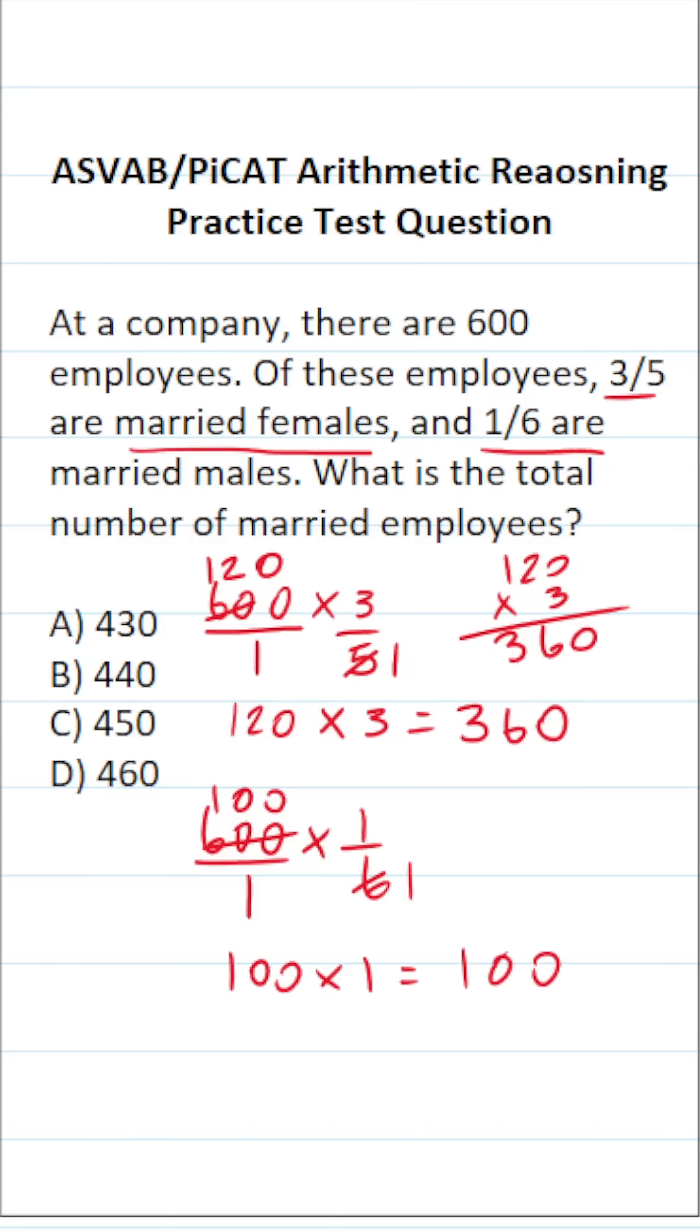So there are 360 married females and 100 married males at this company. How many are married in total? That's going to be 360 plus 100, which is going to be 460. So in total, D, 460 of the 600 employees are married.